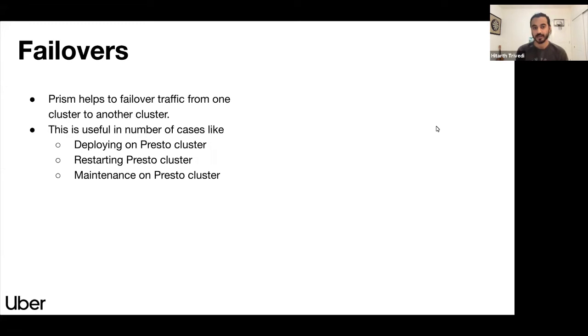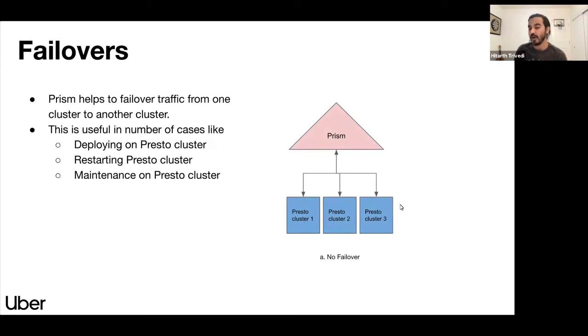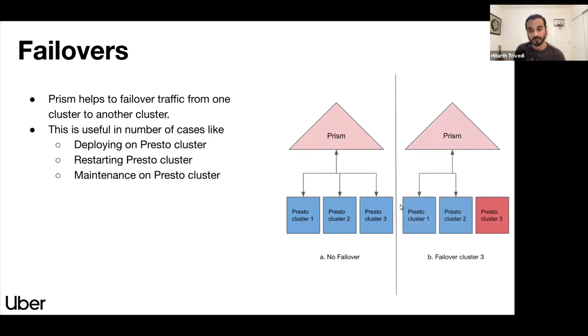Another important feature is failovers. Now failover is very frequently used feature for us at Uber. What failover does is it helps in taking a cluster out of rotation. So let's say in this particular case we have three clusters and suppose you had to take let's say cluster three for doing some maintenance work or you are restarting the cluster or you are deploying new code to the cluster. In that case, instead of failing all the queries, we will do a failover such that Prism will no longer forward new queries to that cluster and we can do maintenance on that cluster without having any impact on the reliability.